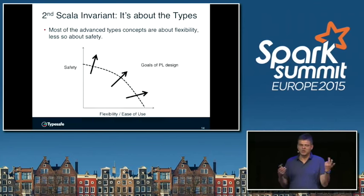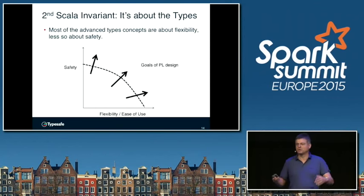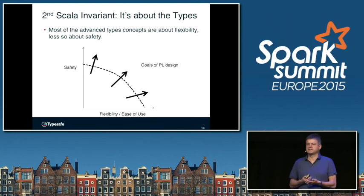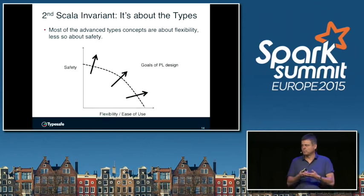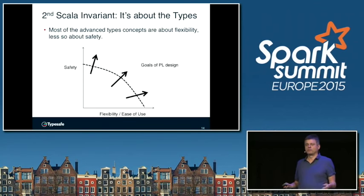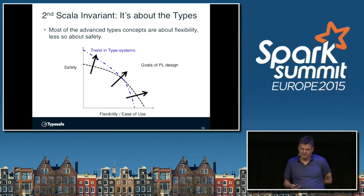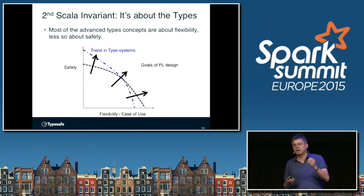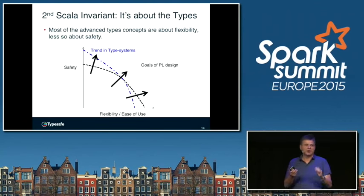On the other side, if you want to be maximally safe, you write your program in a theorem prover like Coq or Agda, and you can actually prove the correctness of your program in the type — but it takes a long time and a long ramp-up. The trend in type systems has recently been more towards safety. We see that in languages like Haskell, Idris, and Agda, where you push the boundary of safety — sometimes even at the expense of ease of use.